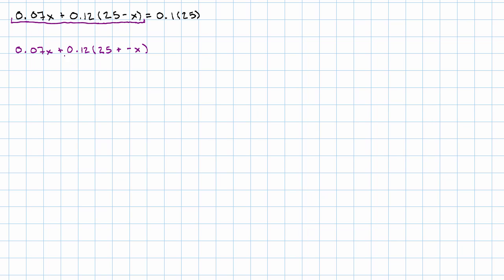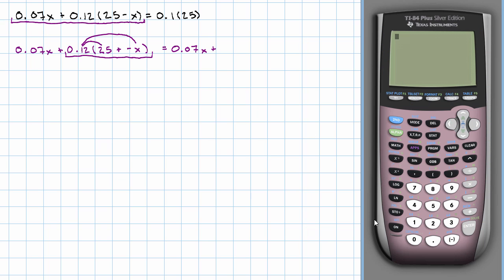Now I'm going to simplify this term by distributing the 0.12. So let's see. The 0.07x, I'm just going to copy, plus 0.12 times 25. That sounds like a job for the calculator. We'll take 0.12 times 25. That's 3.